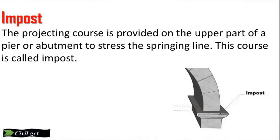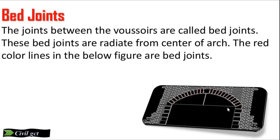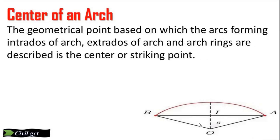Impost: the projecting course provided on the upper part of the pier or abutment to receive the springing line — this course is called the impost. Bed joints: the joints between the voussoirs are called bed joints. These bed joints radiate from the center of the arch — the red colored lines in the figure are the bed joints. Center of an arch: the geometrical point based on which the arcs forming the intrados, extrados, and arch rings are drawn is called the center or striking point.